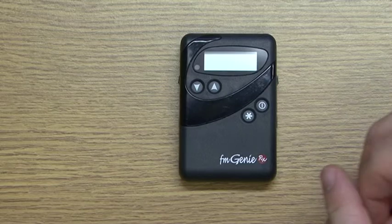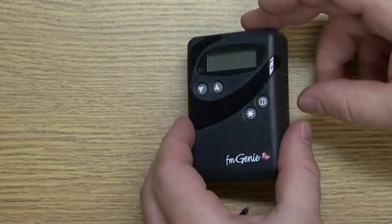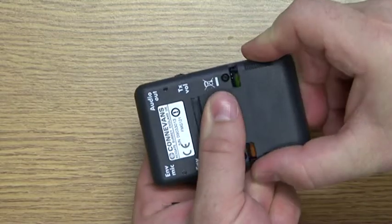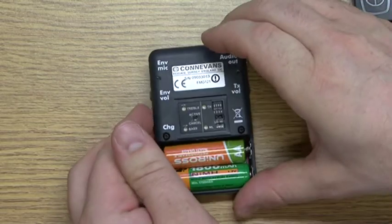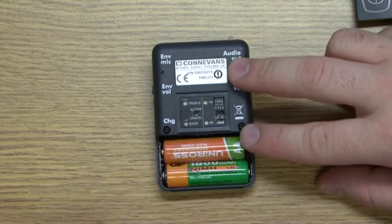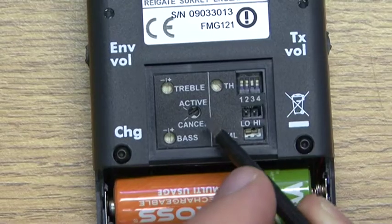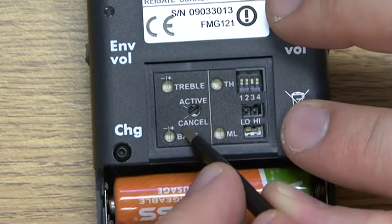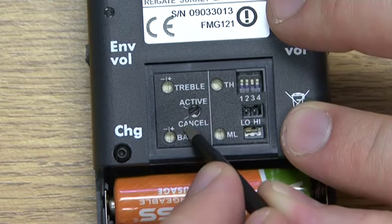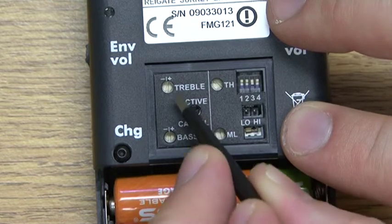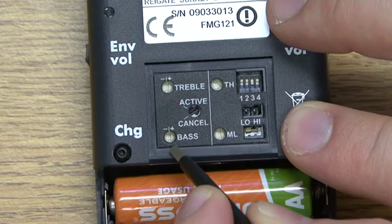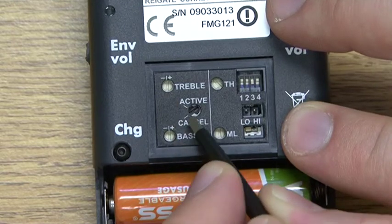This is the FM Genie receiver. By removing the battery cover on the back, you can see a number of settings. An activation control is available for the independent adjustment of the treble and bass controls, which is normally not required and left in the cancel position. The active position enables the treble and bass controls to affect the output frequency response curve.